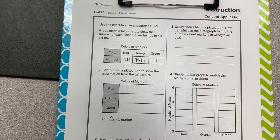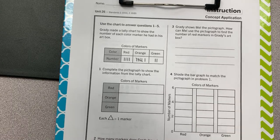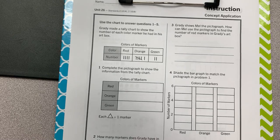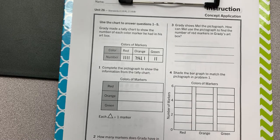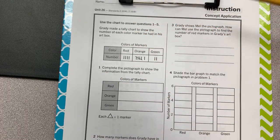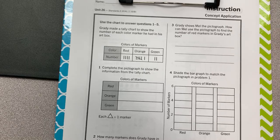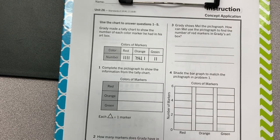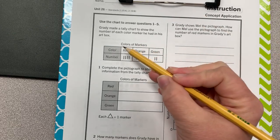Alright, this is data lesson part two. You should now be on page 261. It says use the chart to answer questions one through five. So we're going to use this chart to answer the entire page. It says Grady made a tally chart to show the number of each color marker he had in his art box. So here's our title, colors of markers.